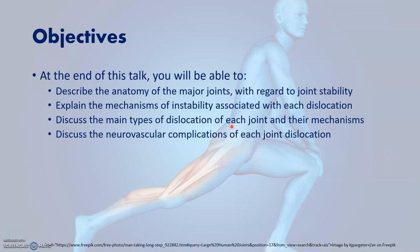By the end of the talk, you'll be able to talk about joint stability and the anatomical structure of the joint in relation to its stability, mechanisms of instability with dislocation, mechanisms of dislocation and the main types of dislocation of each joint, and neurovascular complications that may be associated with the different joint dislocations.